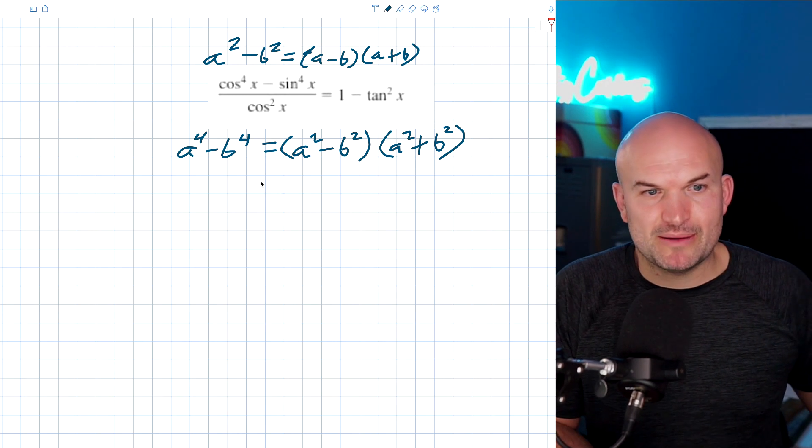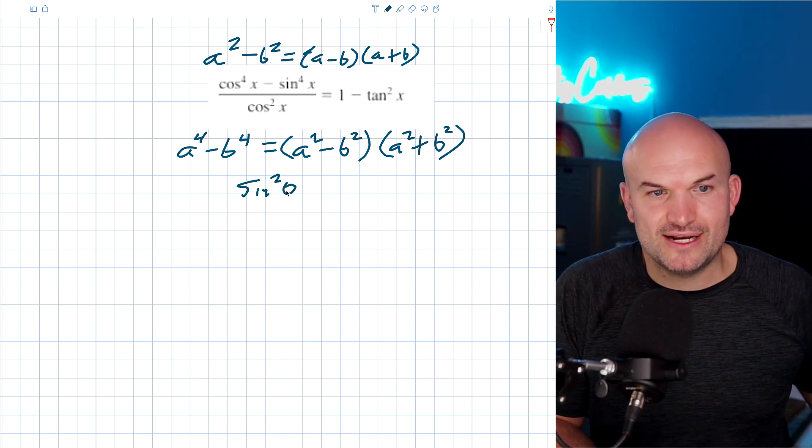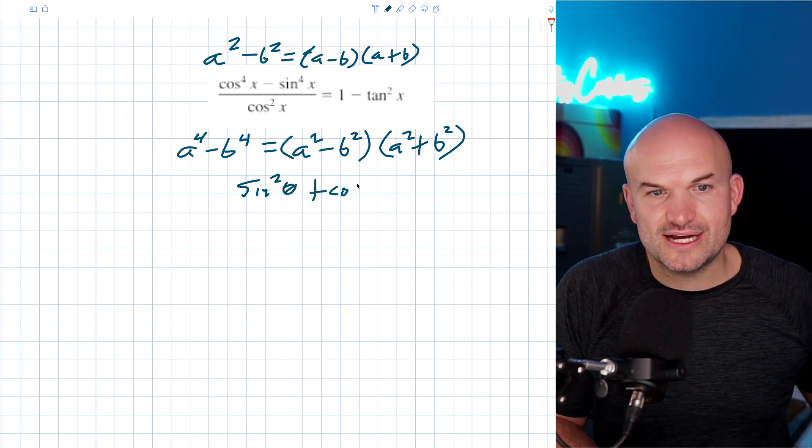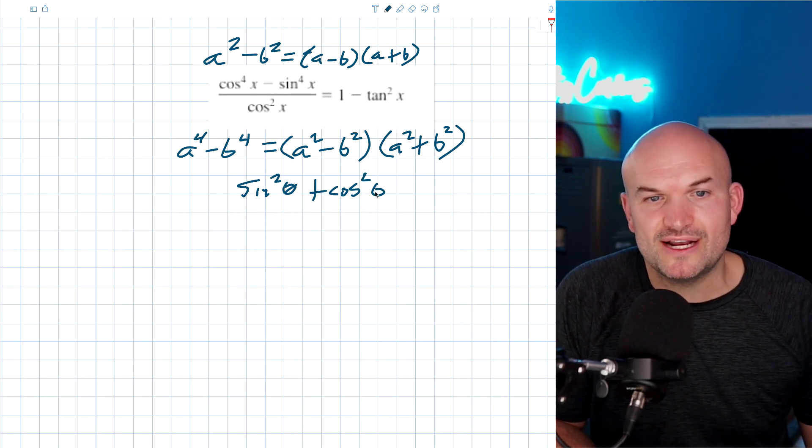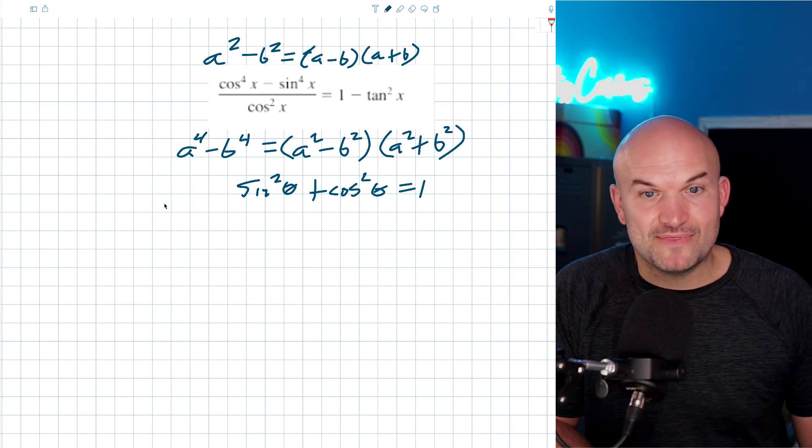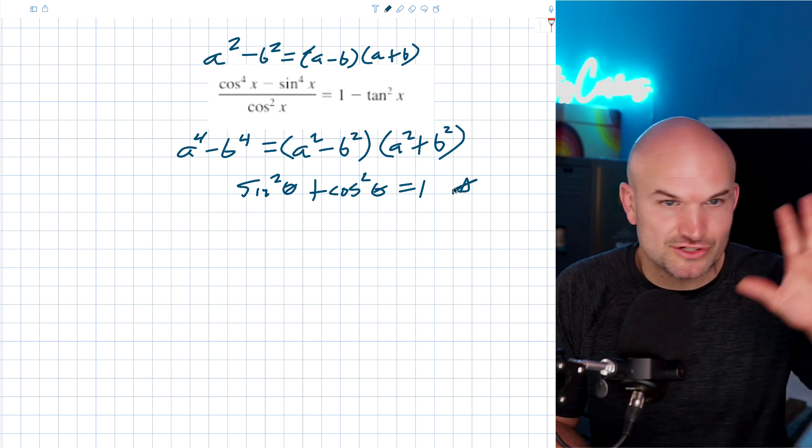Now, the first one everybody should have memorized is sine squared of theta plus cosine squared of theta. Well, it doesn't matter. Sine squared of theta plus cosine squared of theta is equal to one. Now, that is the most important. I think every student should have this memorized.